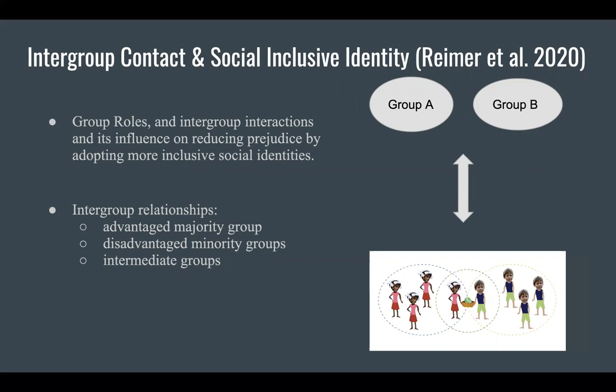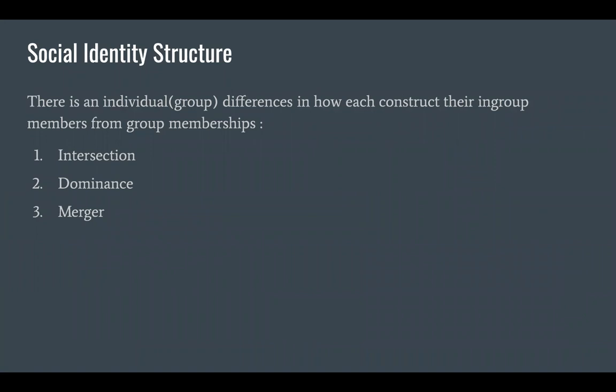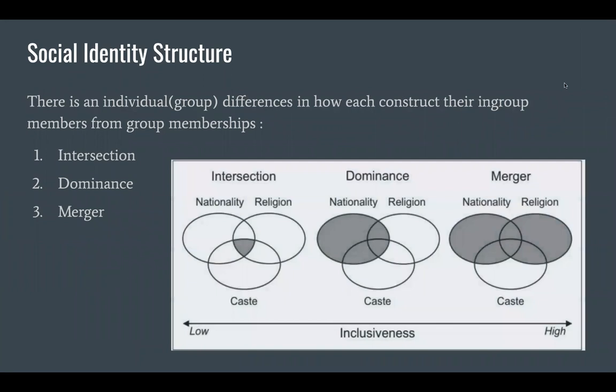As you can see in the diagram, Group A and Group B start out excluded from one another. The lower diagram is like a Venn diagram where they are included. According to the article, there are three different ways individuals construct their in-group members: intersection, dominance, and merger.